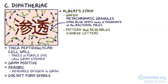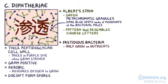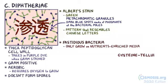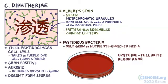Finally, C. diphtheriae is a fastidious bacteria. This means that it can only grow on special, nutrient-enriched media. The medium commonly used to grow this bug is Cysteine Tellurite Blood Agar, on which C. diphtheriae grows into black colonies.